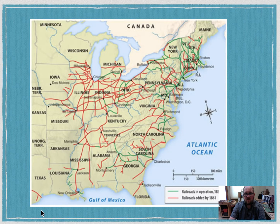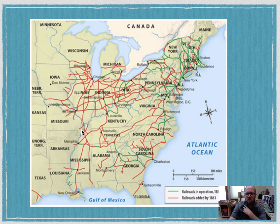Before the Civil War, around 1850, you see very few rail lines going through the South. Only about two lines connected the North and South together in this time period. But in the North, there were massive amounts of railroads being built in the 1840s and 1850s.